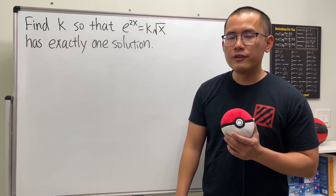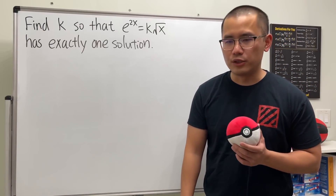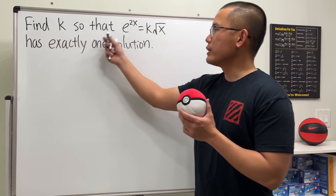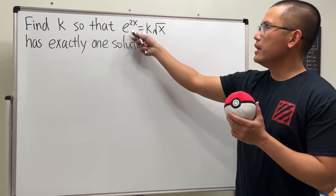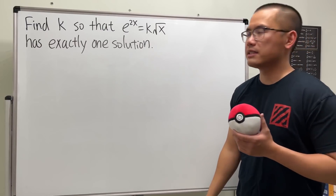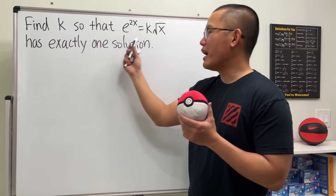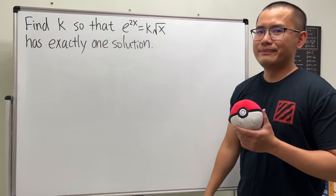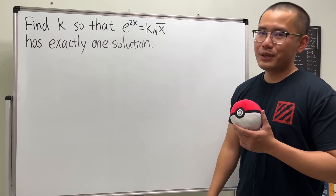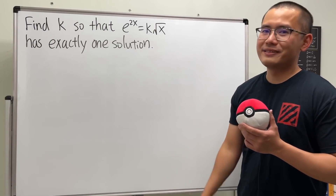Here's a pretty good question for Calculus 1 students. We want to find k so that the equation e^(2x) = k times the square root of x has exactly one solution. Please pause the video and try this first.